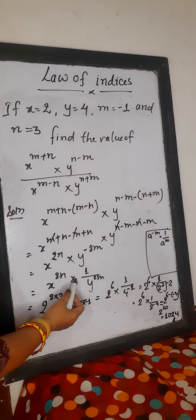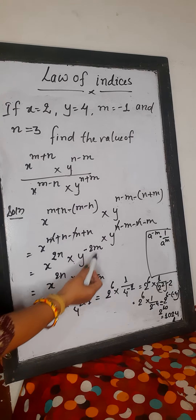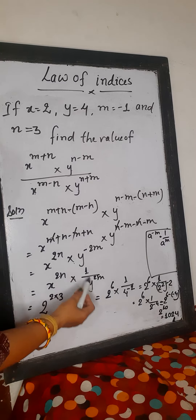Hello everyone. If x is equal to y is equal to 4, m is equal to minus 1, n is equal to 3. Find the value of: x to the power n plus n into y to the power n minus m, into y x m minus n into y n plus m.